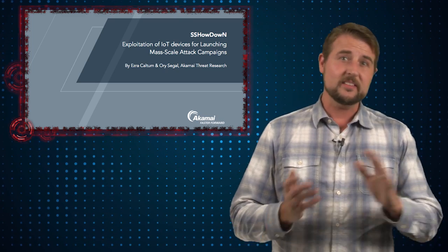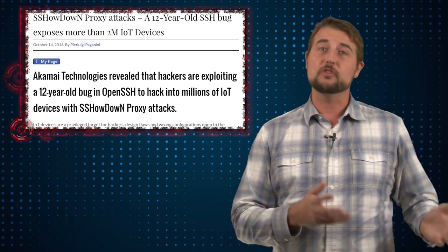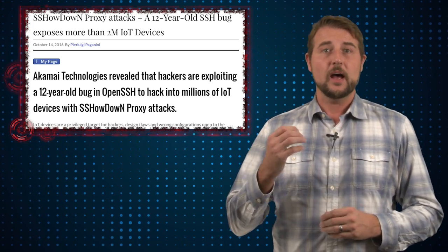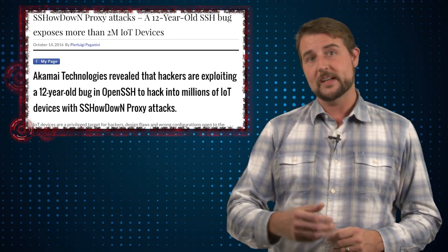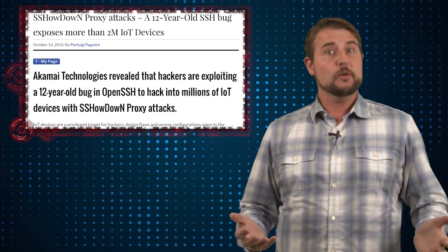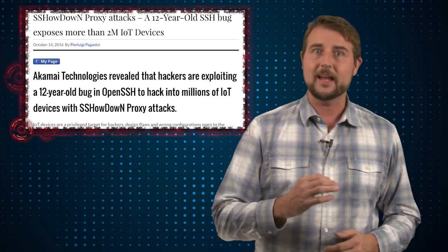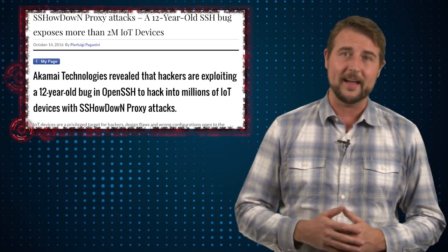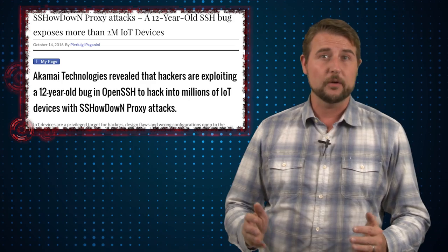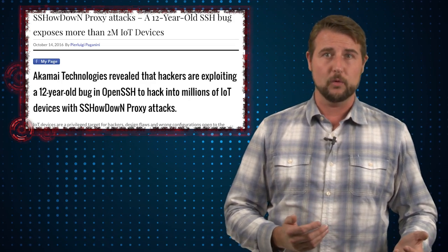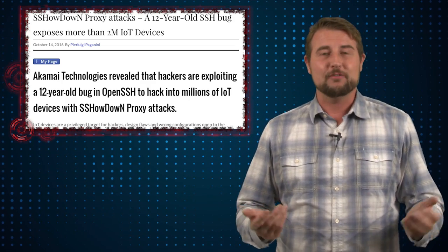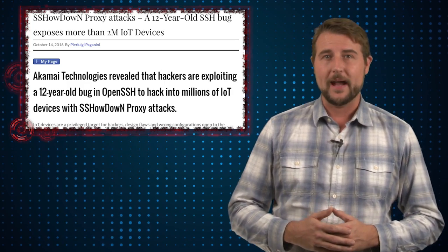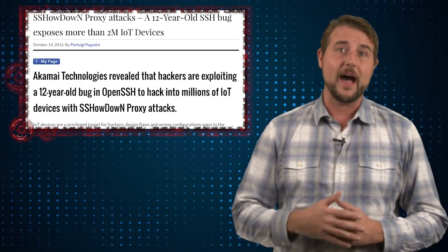The big takeaway here is this is an old known vulnerability. Back in 2004, there was a CVE where Open SSH installed with TCP forwarding enabled by default. Most Open SSH servers should disable this by default, but apparently these Internet of Things devices don't do that. Simply by changing the configuration to disable this TCP forwarding, which really shouldn't be needed for these Internet of Things devices, you can really mitigate a lot of the impact of these particular IoT attacks.